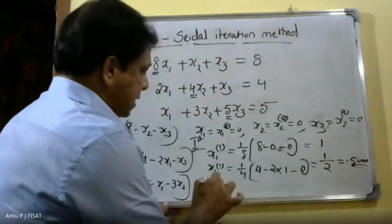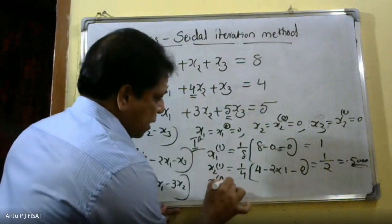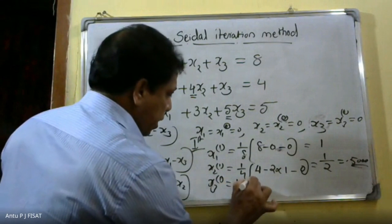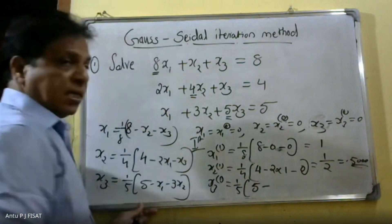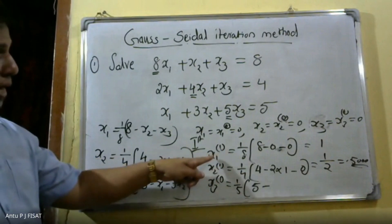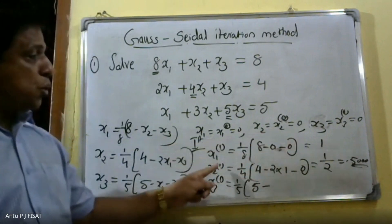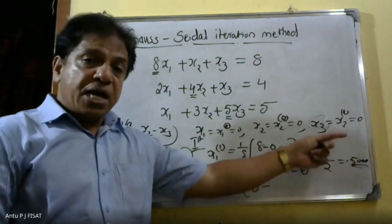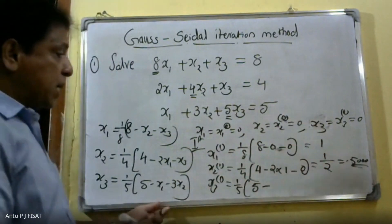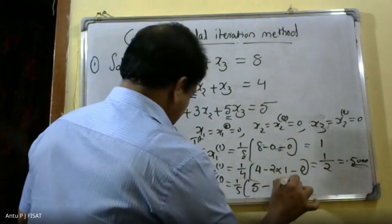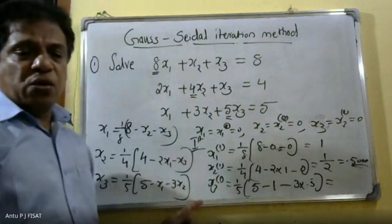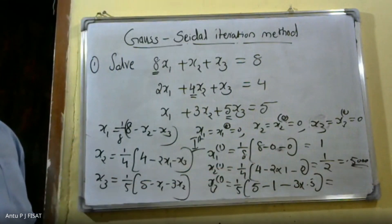Now x3 raised to 1: using (1/5) into (5 minus x1 minus 3x2). Using the latest values x1 equals 1 and x2 equals 0.5: (1/5) into (5 minus 1 minus 3 times 0.5) equals (1/5) into 3.5.